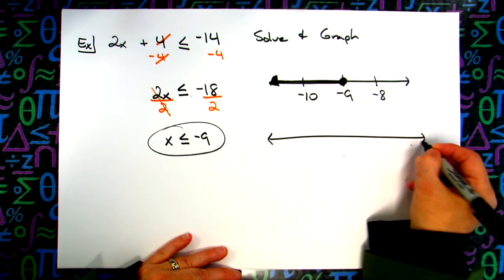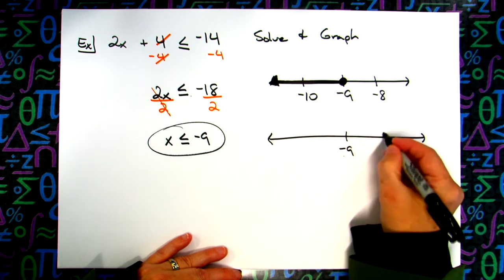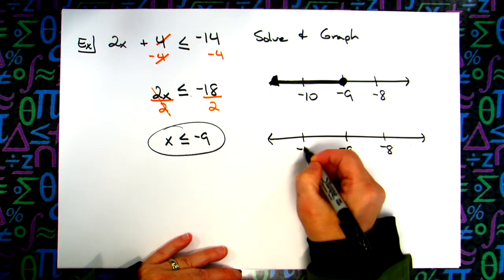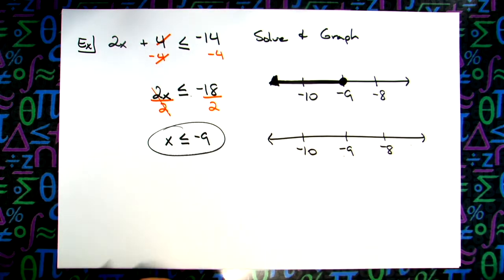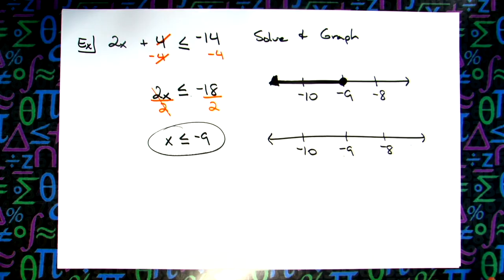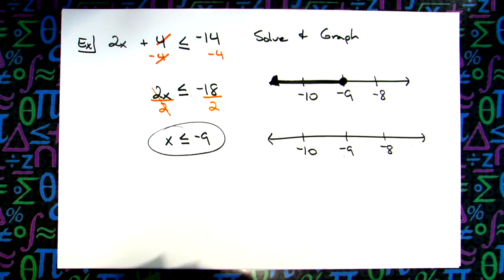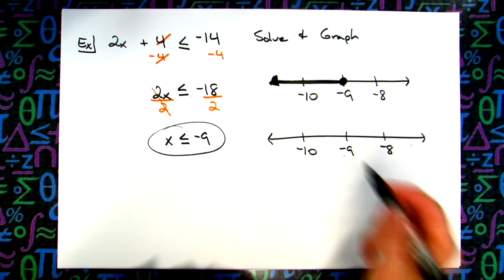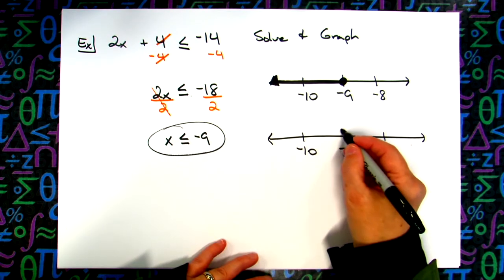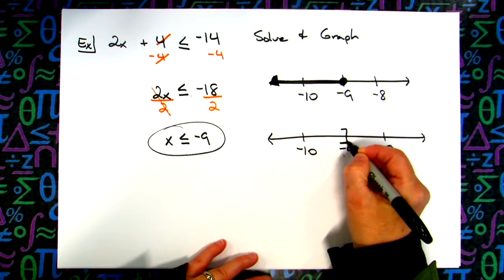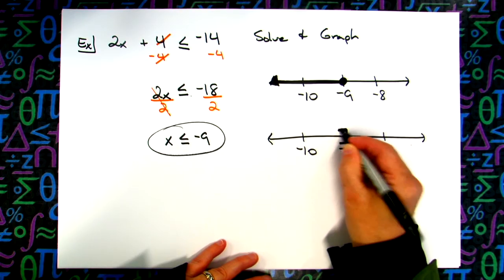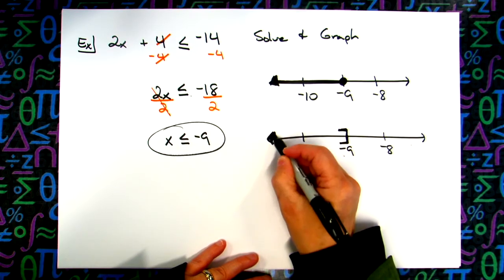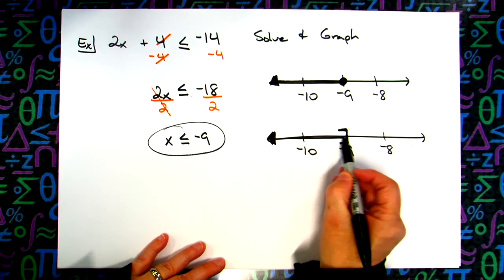Draw it again with the same numbers. What kind of bracket on the negative 9 — curvy or square? It's going to be square. Since I shade to the left, I make my square bracket go to the left, and everything gets shaded to the left.